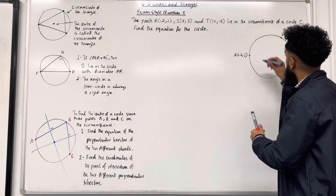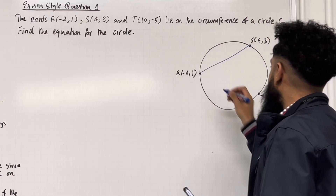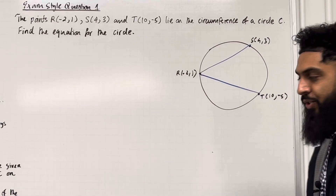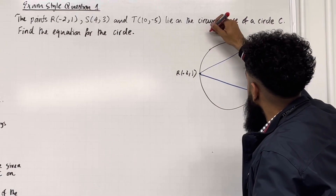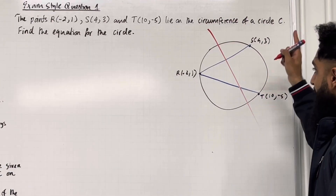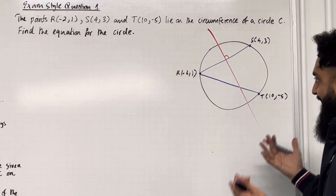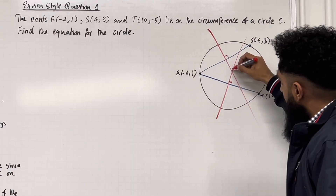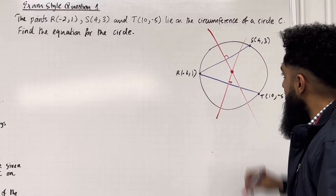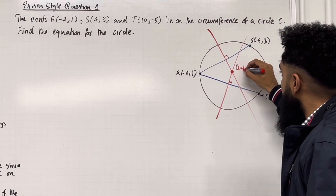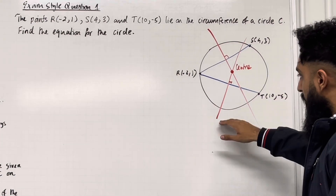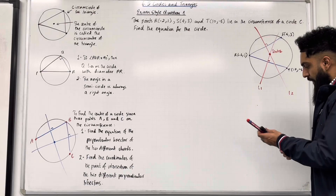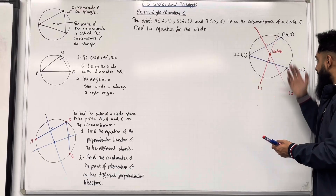RS is this chord over here, and RT is this chord over here. Let's draw the perpendicular bisectors to each of these chords. Here is my first perpendicular bisector — that's the perpendicular bisector to chord RS. Here is my second perpendicular bisector — that is the perpendicular bisector to chord RT. The point of intersection of these two perpendicular bisectors represents the centre of the circle. Let's call this line L1 and this line L2. We're going to find the equation of L1 and then find the equation of L2.